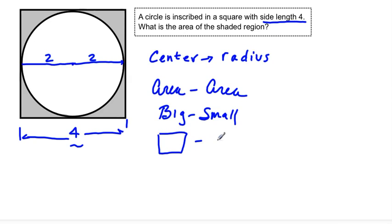What's the small? The circle. So if I get the big area and I cut out the donut, I'll have an answer.